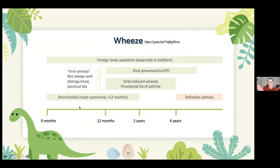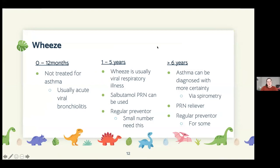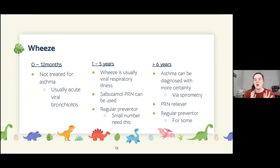Bronchiolitis causes wheeze in children under one. The gap between bronchiolitis and asthma can be filled with viral-induced wheeze or viral pneumonitis. Foreign body aspiration is considered at any age. Similar to what was said earlier — knowing the child's age helps narrow the differential. For management: bronchiolitis is largely supportive; ages one to five is a middle ground where a little salbutamol may help but heavy asthma-based treatment isn't used; over six years old, follow the asthma pathway.